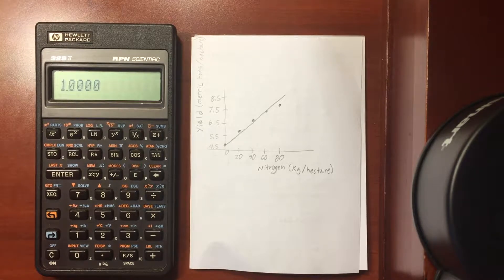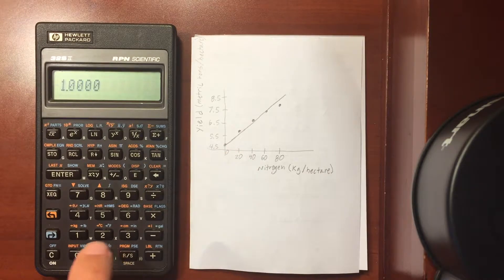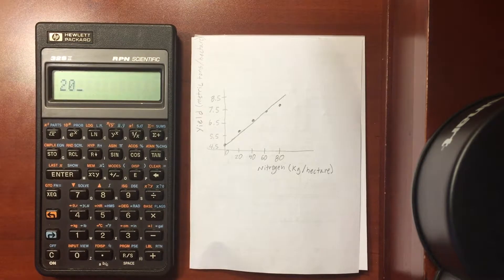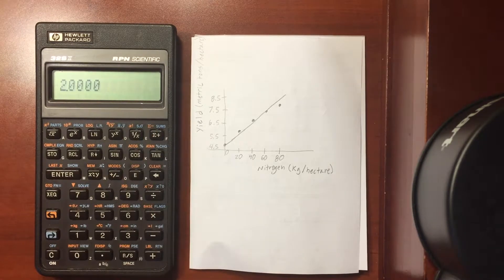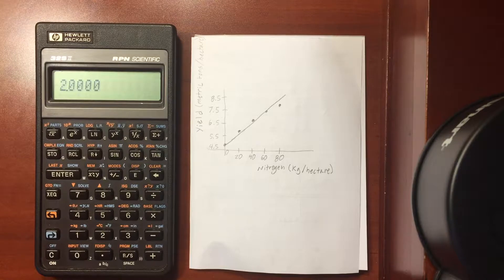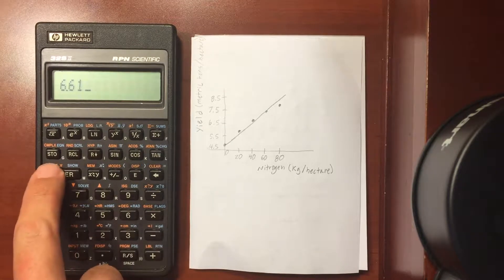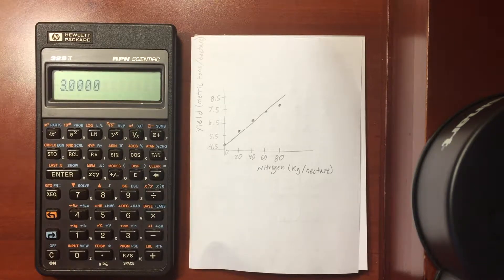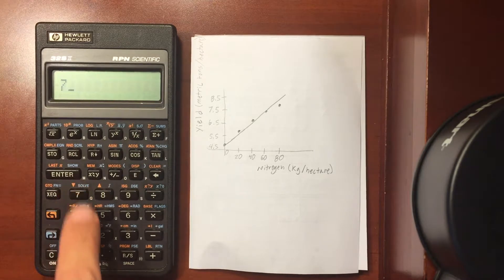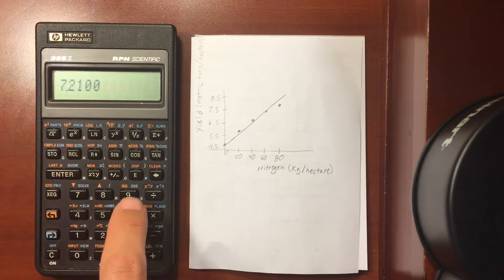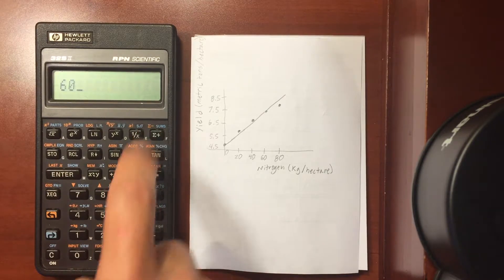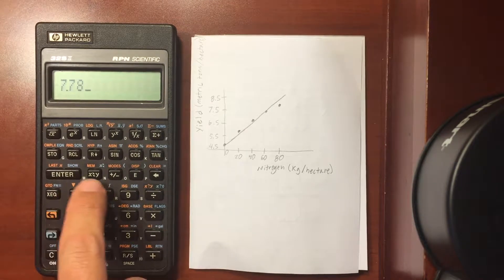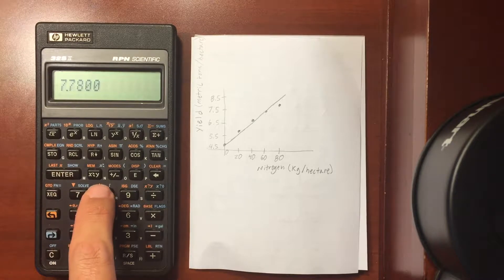So the second value here is 5.78 and 20 on the x-axis. Let's sum that. Third value 6.61 and on the x-axis we are at 40. Sum that. Now we have 7.21 and on the x-axis 60. Add that. That's our fourth number. And then the final number is going to be 7.78 and an x value of 80.